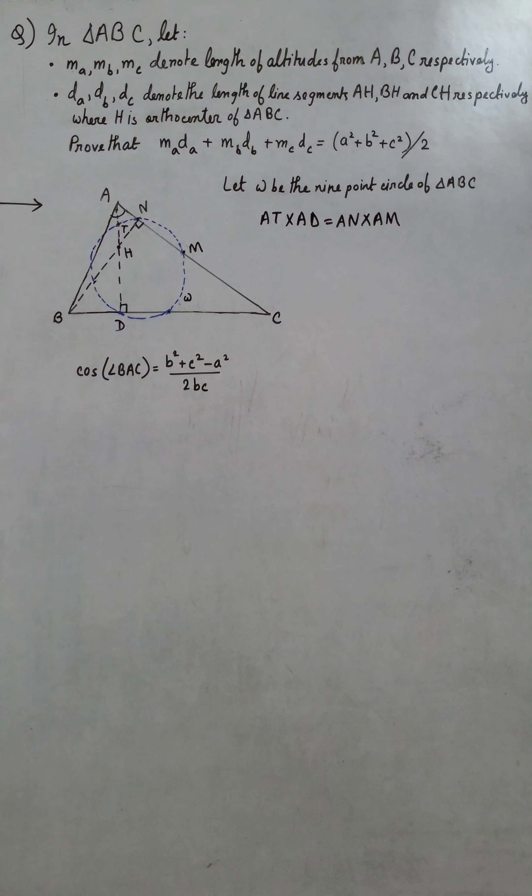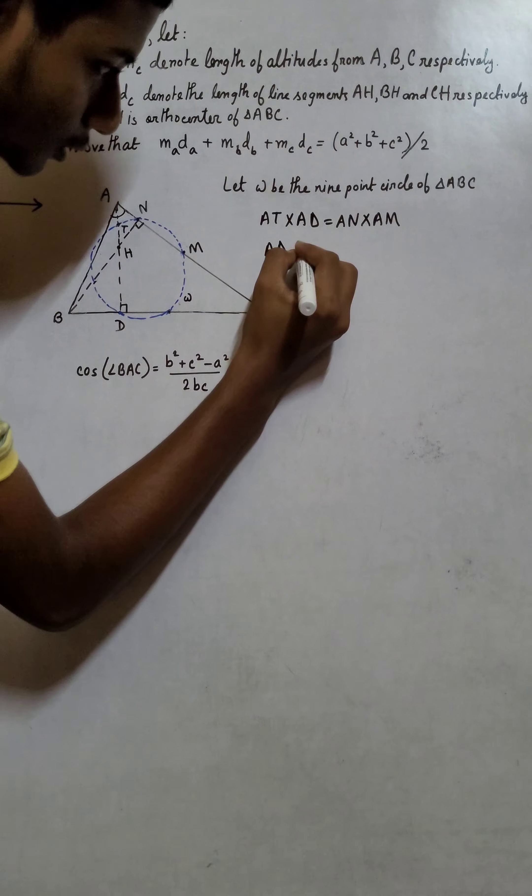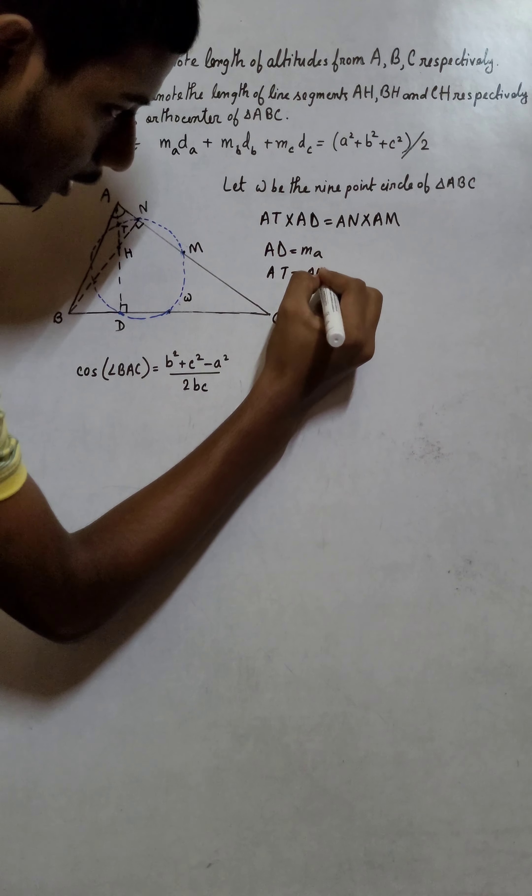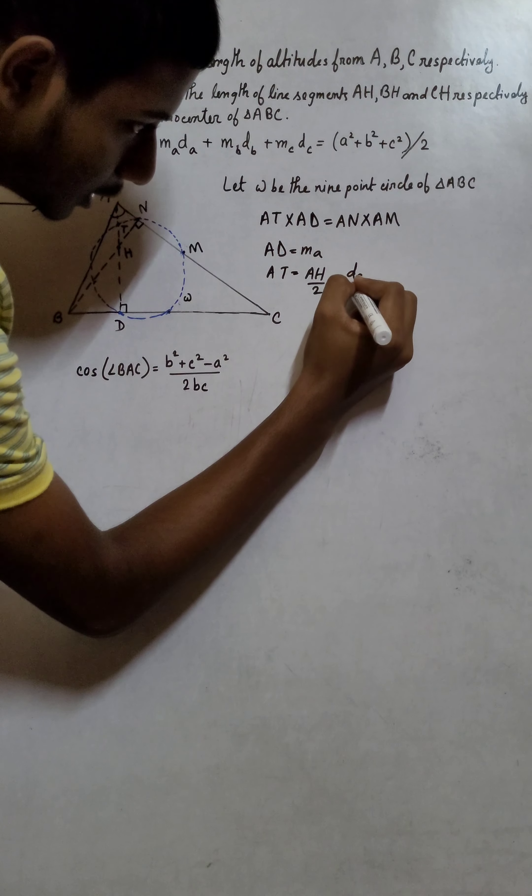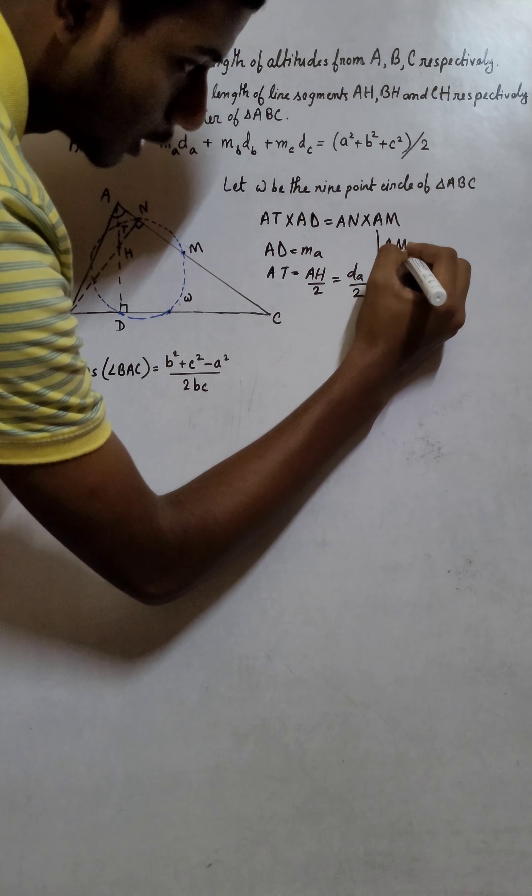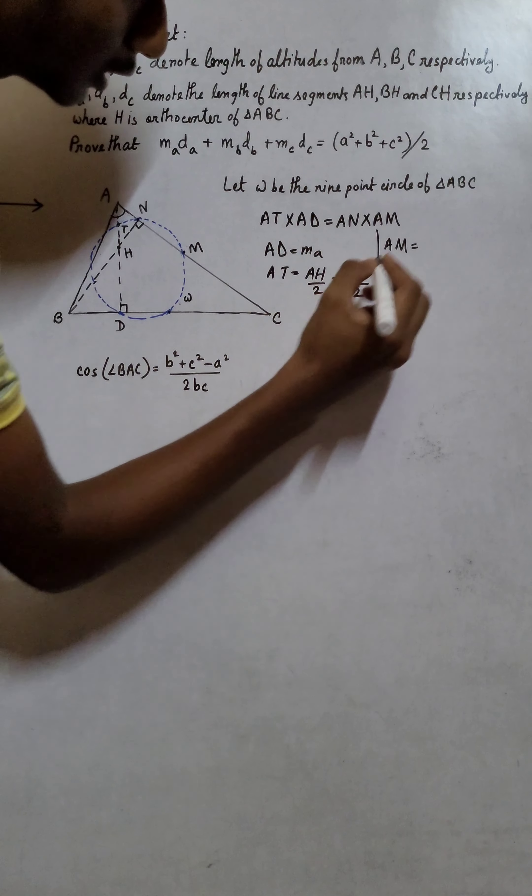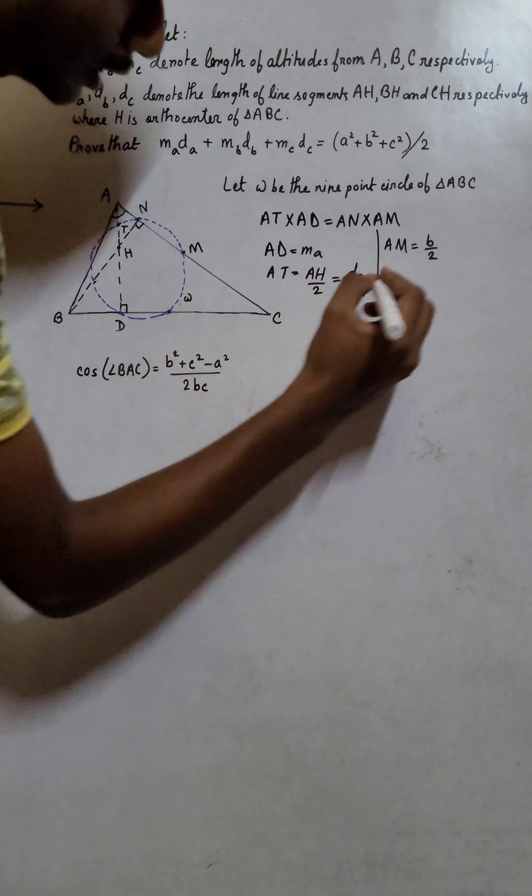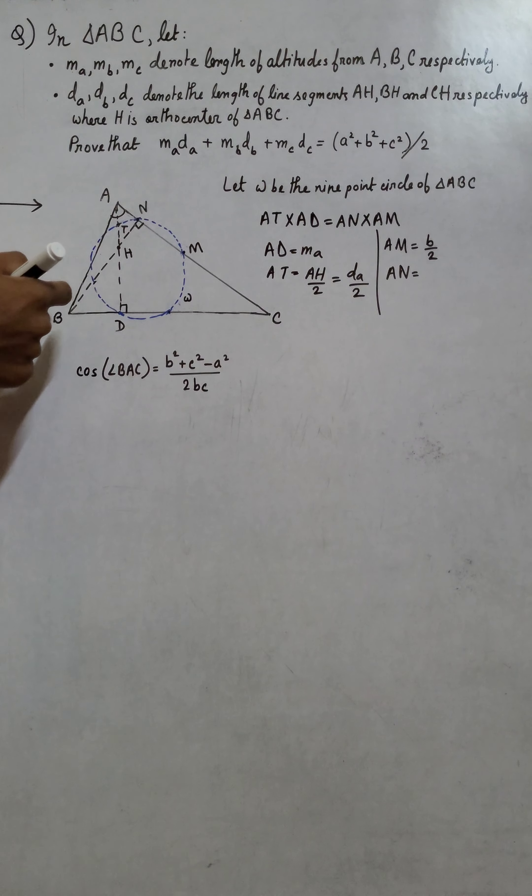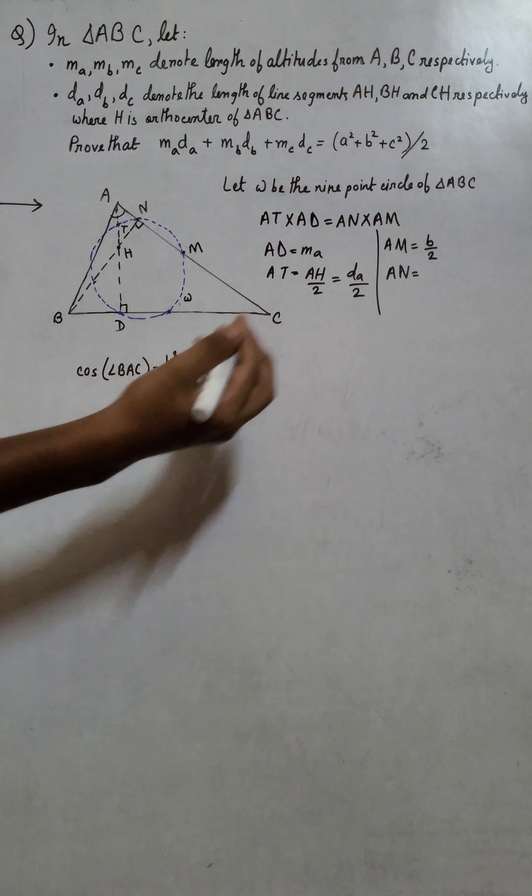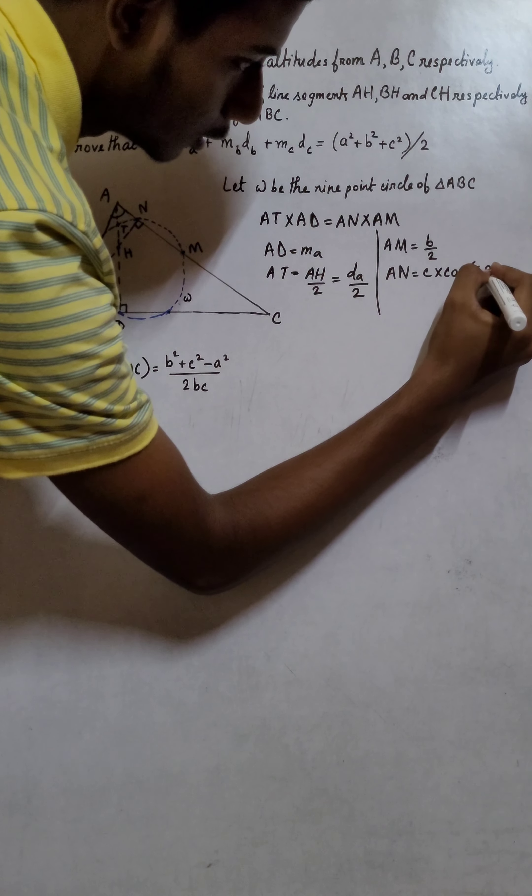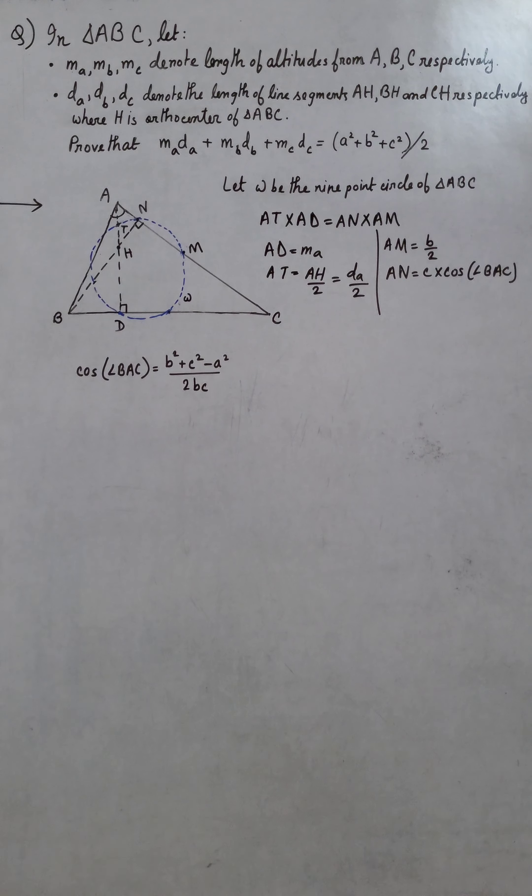From the question, AD is just MA, and AT is AH/2, which is DA/2. We also notice that AM is AC/2, which is B/2. And AN, from the right angle triangle BAN, is AB cos(angle BAC). So we write it as C cos(angle BAC).